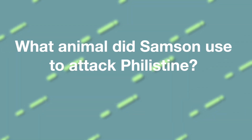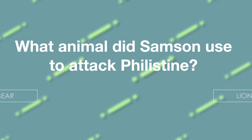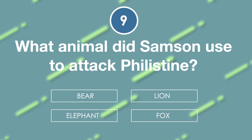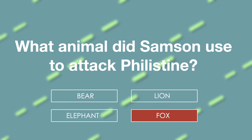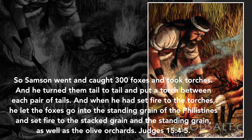What animal did Samson use to attack the Philistines? Is it bear, lion, elephant, or fox? The answer is fox. 'So Samson went and caught three hundred foxes and took torches. And he turned them tail to tail and put a torch between each pair of tails. And when he had set fire to the torches, he let the foxes go into the standing grain of the Philistines and set fire to the stacked grain and the standing grain, as well as the olive orchards.' Judges chapter 15 verses 1 to 5.